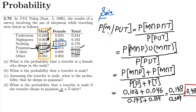That's it for today. We've solved question 2.79, inferring probabilities from a sleepwear survey table. If you have any questions, you can ask in the comment box — see you soon!